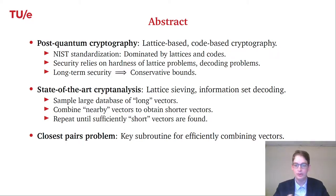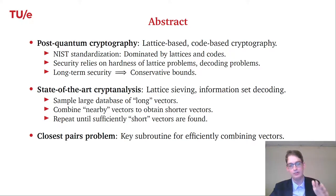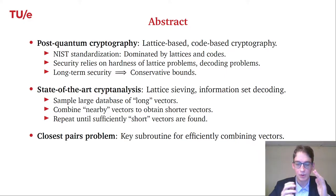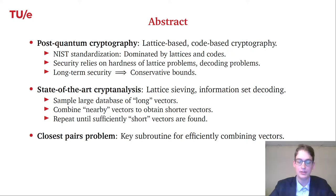A key subroutine in this approach in both settings is the closest pairs problem: given a list of vectors in your space, we want to find almost all pairs of vectors that can be combined to find shorter vectors — that is, all pairs of nearby vectors in our list.